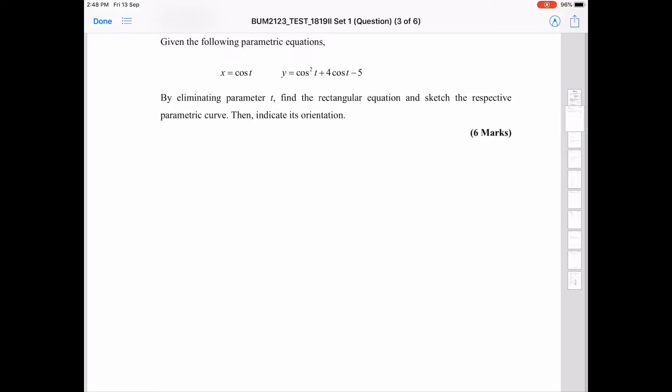Given the following parametric equation, x equals to cos t and y equals to cos square t plus 4 cos t minus 5. By eliminating parameter t, find the rectangular equation and sketch the respective parametric curve. Then, indicate its orientation.